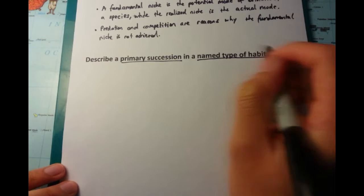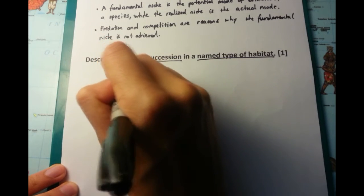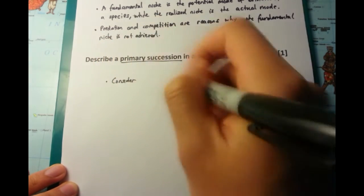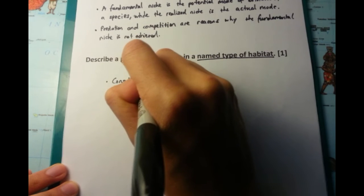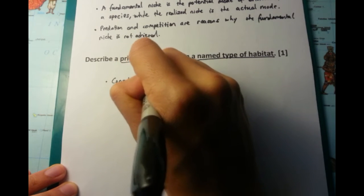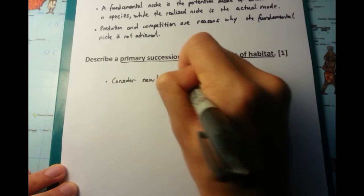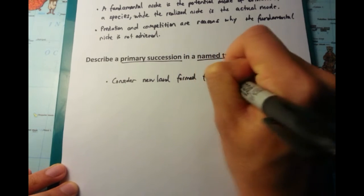Now let's talk about the next part. This three mark question is, describe a primary succession in a named type of habitat. So named type of habitat, remember to name it. And I'm going to talk about new land which is formed from a volcanic eruption.